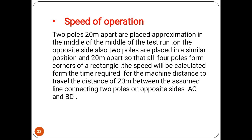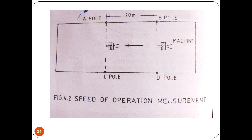For measuring speed of operation, two poles 20 meters apart are placed approximately in the middle of the test run, and on the opposite side two poles are also placed 20 meters apart, so that all four poles form the corners of a rectangle. The speed is calculated from the time required to travel the distance of 20 meters between the assumed line connecting two poles on opposite sides AC and BD. You can see the figure of the speed of operation measurement.